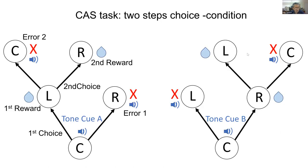Here is the task structure in the two-step choice condition. When the rat enters the center port, an auditory stimulus is delivered from a speaker — either a high-frequency or low-frequency tone — and the animal is required to choose the left port or right port depending on the tone. For example, in tone A, the animal needs to go left to obtain the reward. If the rat goes right, it cannot obtain a reward; instead, an error tone is delivered. If the animal makes a correct first choice, it then needs to go to the top port to obtain a second reward. There are two types of errors: a first-choice error, and a second-choice error.